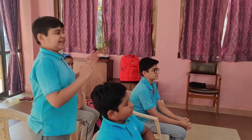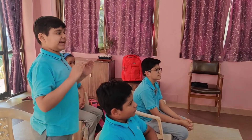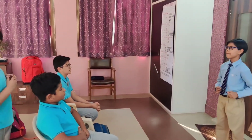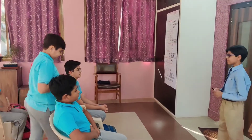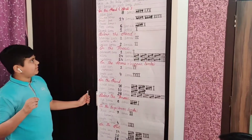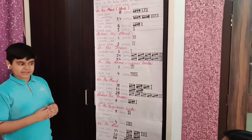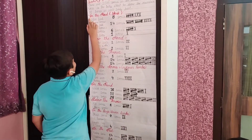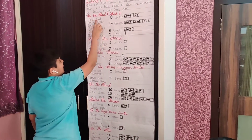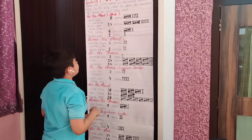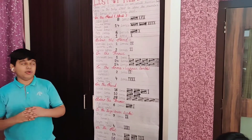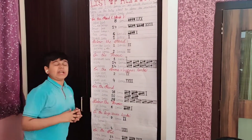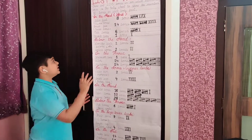Sir, I have made a chart on the bones. Can I share it with the class? Absolutely, go on. First we are going to see bones in the head. The upper part has 8 bones, also known as cranial bones. The lower part has 14 bones, also known as facial bones.